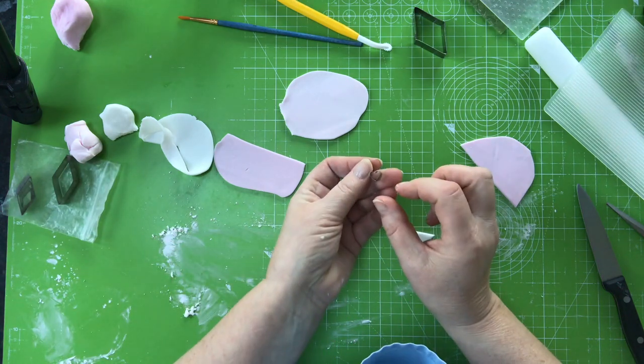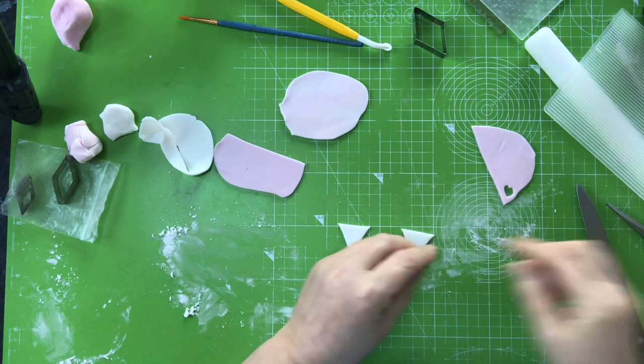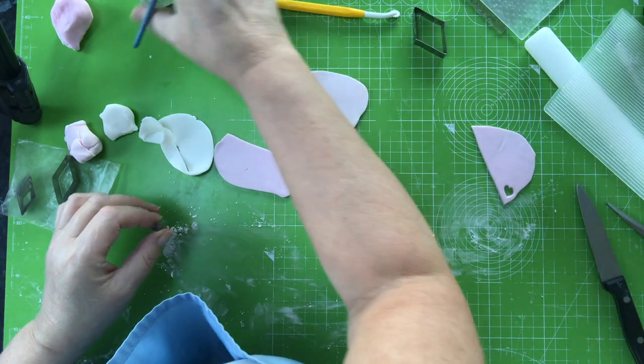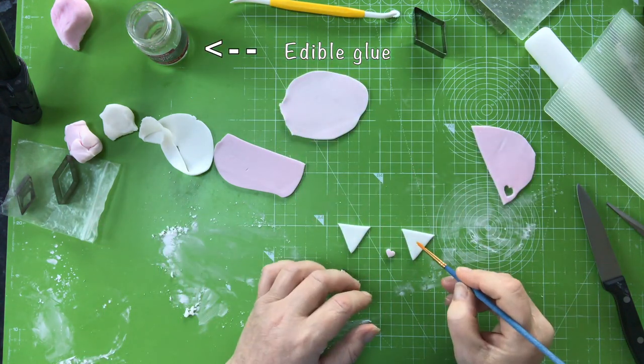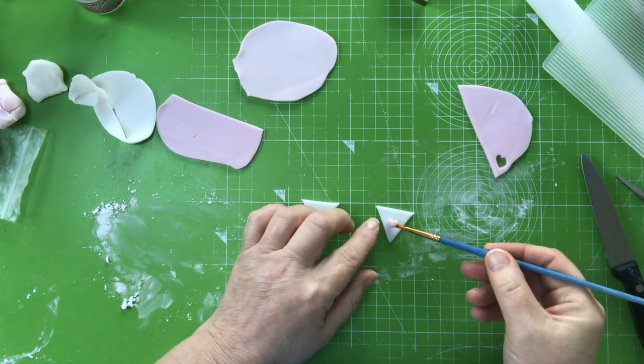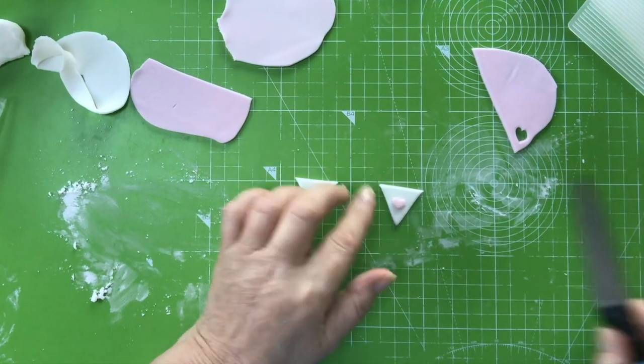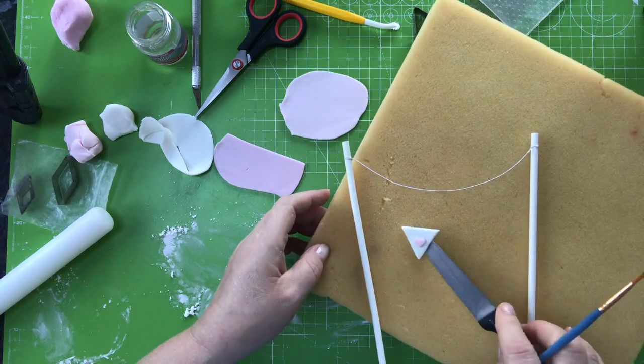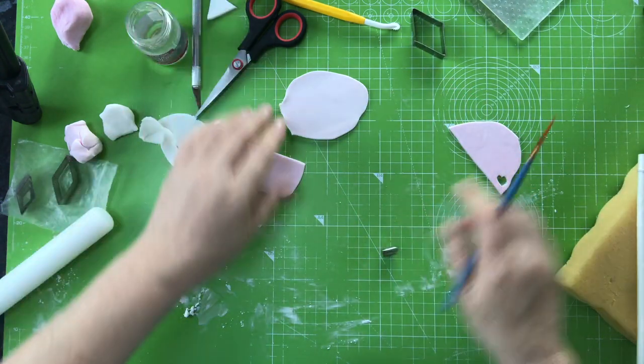And then what I've got here is a tiny heart cutter. All I'll do with that is put it through here. Move that over onto my sponge. Don't need that other white here.